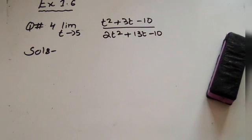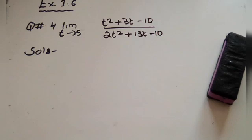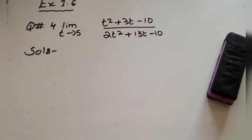We are going to start question number 4, which is limit as t approaches 5 of t squared plus 2t minus 10 divided by 2t squared plus 13t minus 10. Okay.